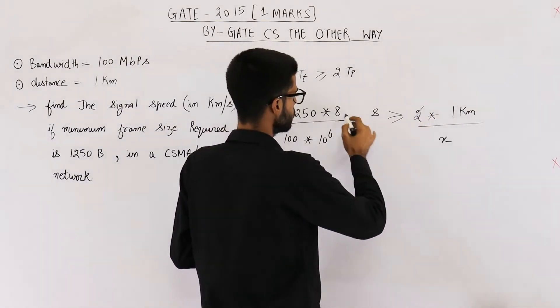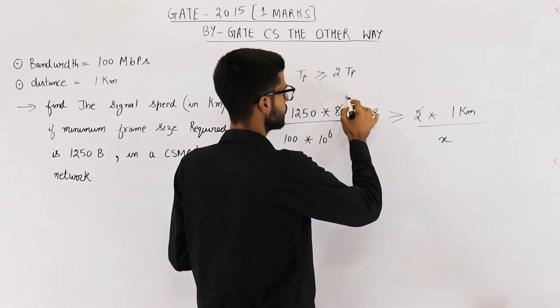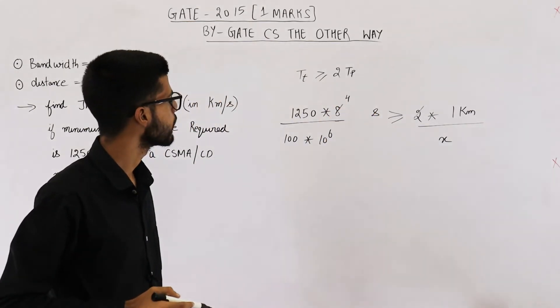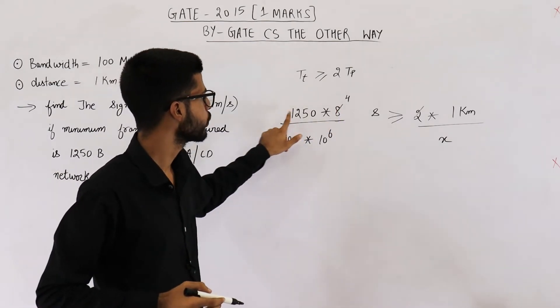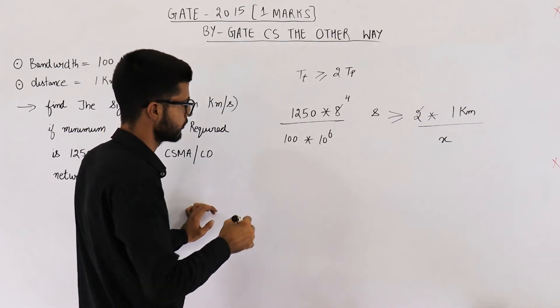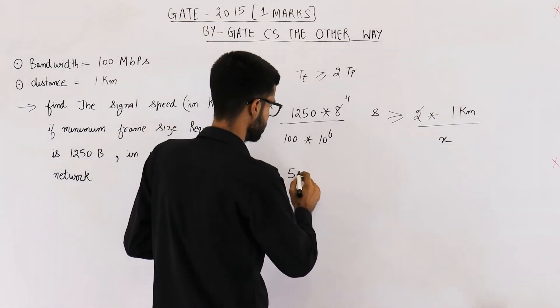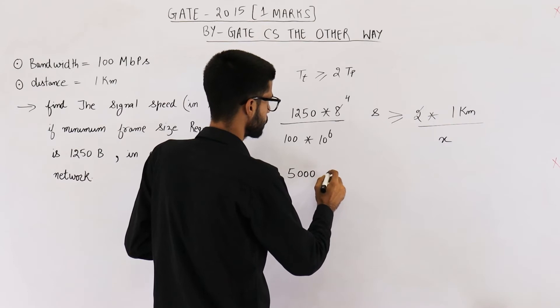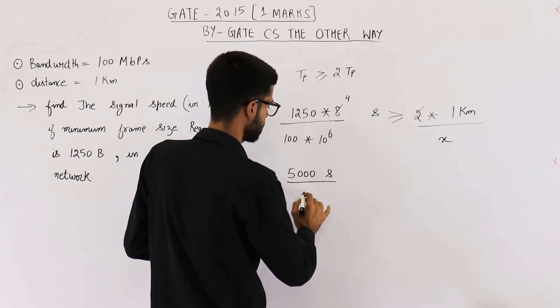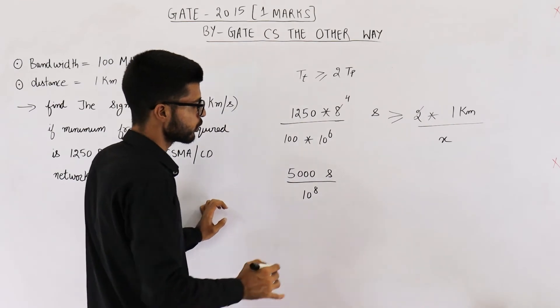Have a look. 2 can be cancelled and you will be left with 4. And 4 into 1250 will be 5000. So, 5000 seconds divided by 10 raised to the power 8 is greater than or equal to...